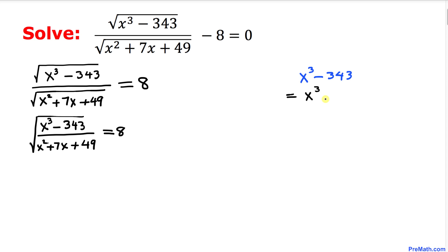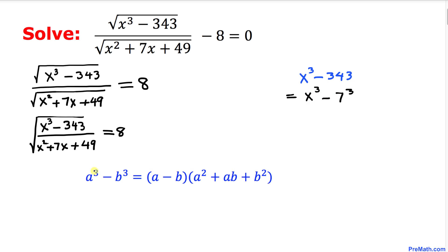Now we can see this binomial as the difference of two cubes. Therefore, we are going to apply this difference of two cubes formula: a³ - b³. Let's go ahead and apply that one.